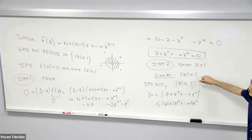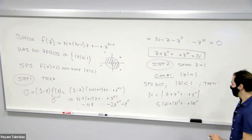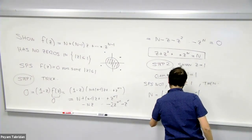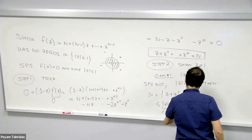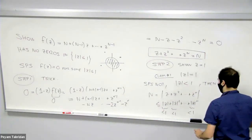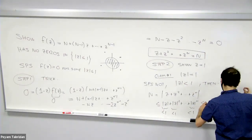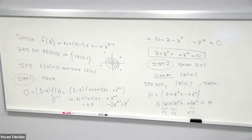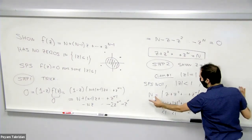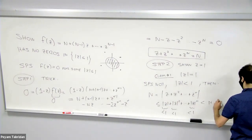But you see, each individual term is less than one. And so what we're doing, we're summing precisely n terms that are less than one. So this whole thing is less than n. And then we get the contradiction that n is less than n and that doesn't work.